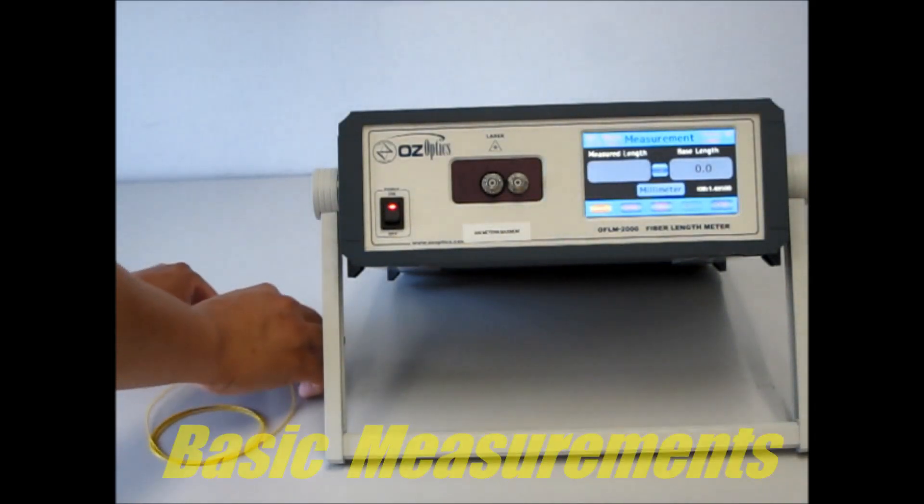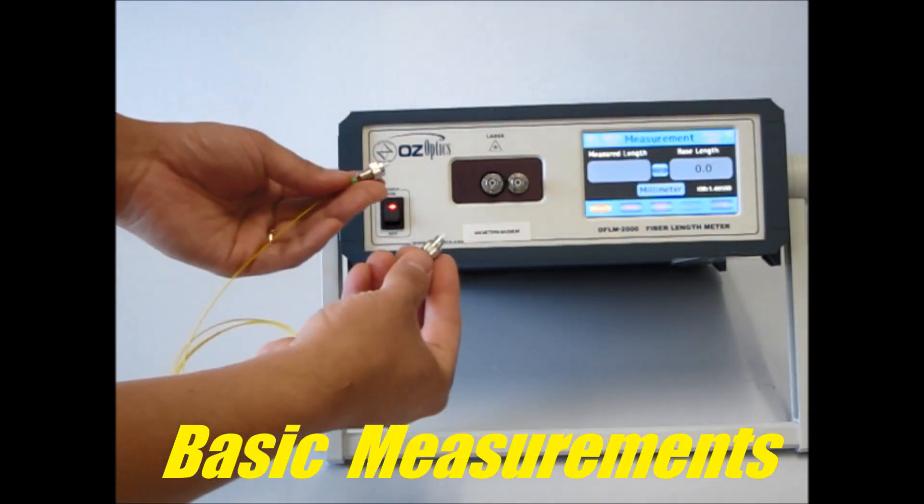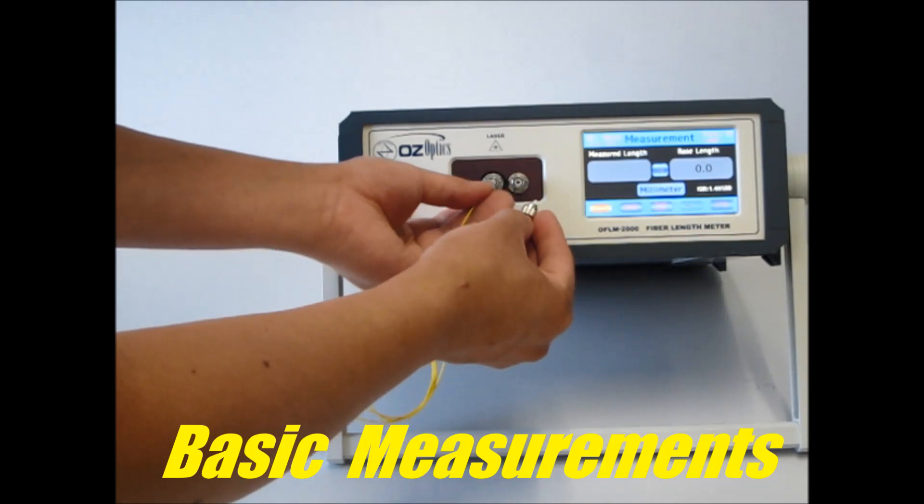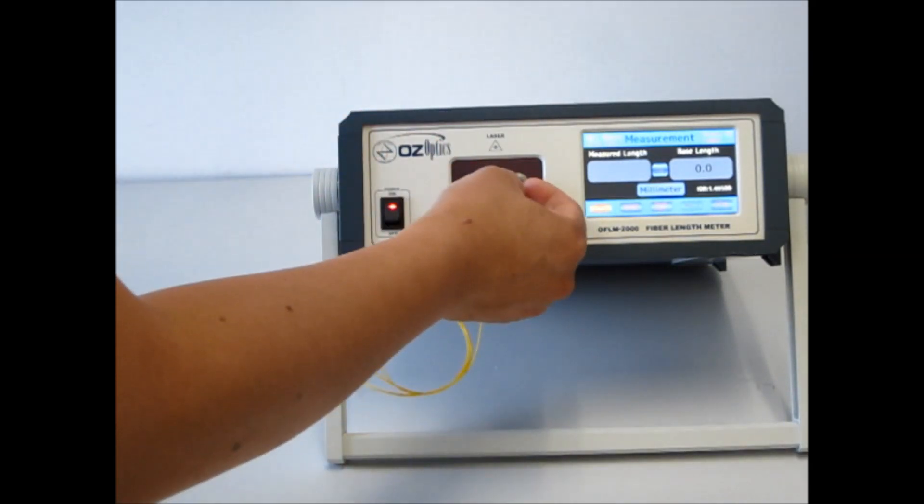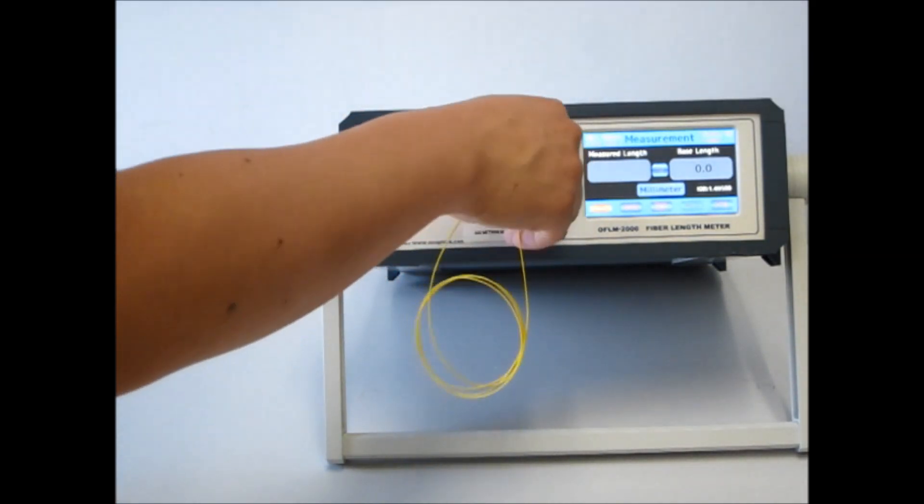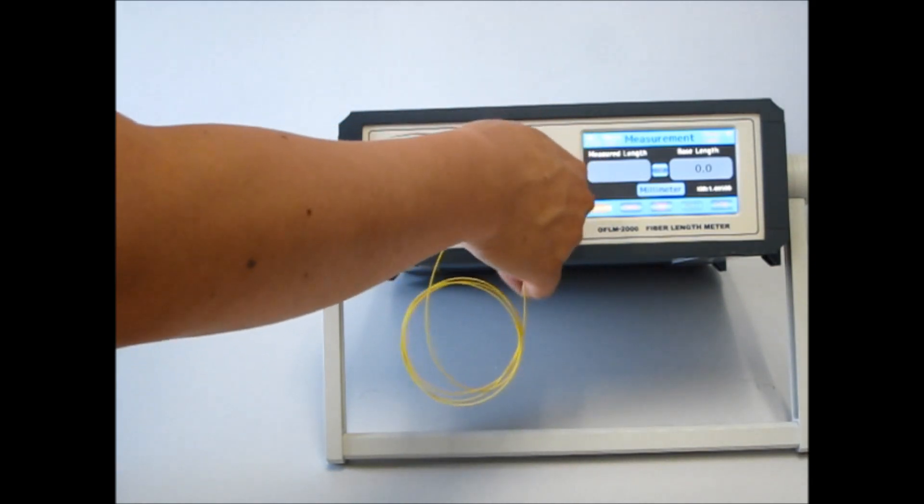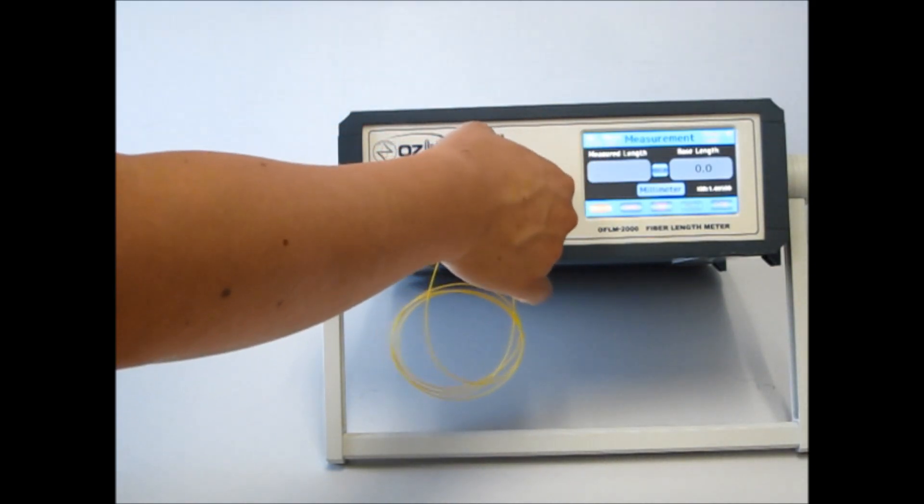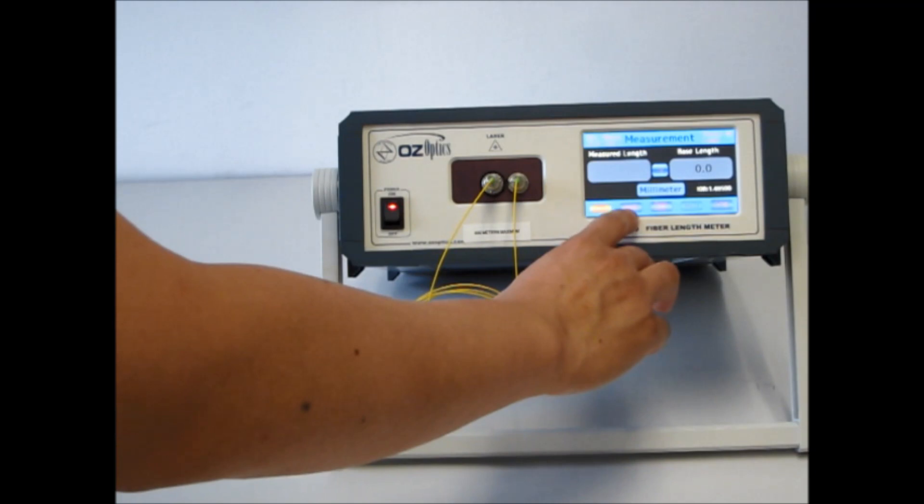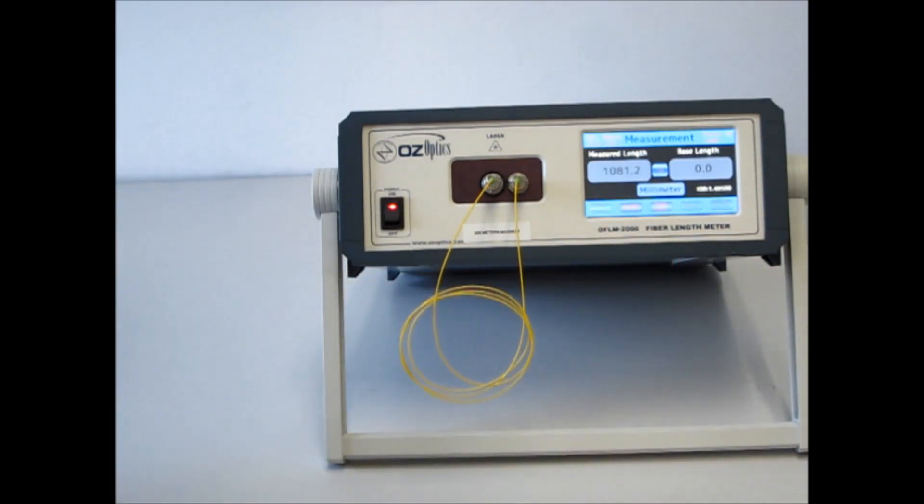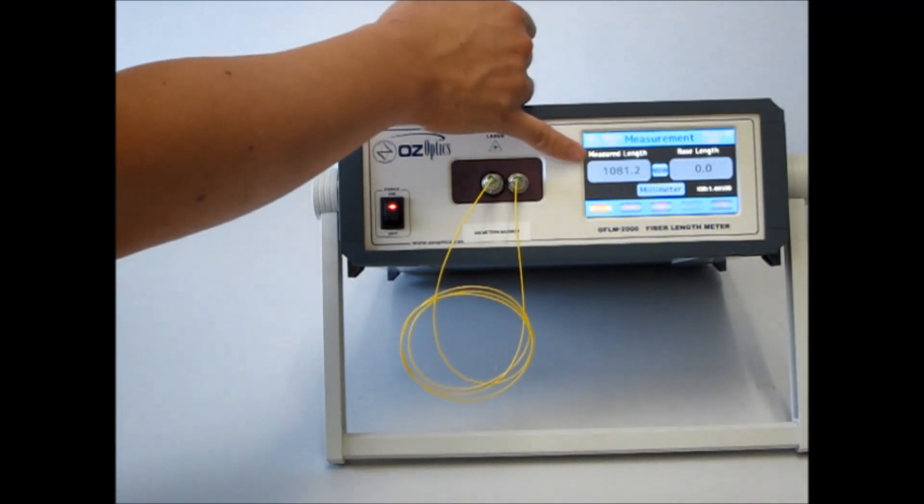Let's make a basic length measurement. We have a patch cord with FC-APC connectors on both ends. We plug one end into the send port, and the other end into the receive port. Tighten up the FC nuts and push the run button, which is the second button along the bottom row. As you can see, the measured length is just over one meter long.